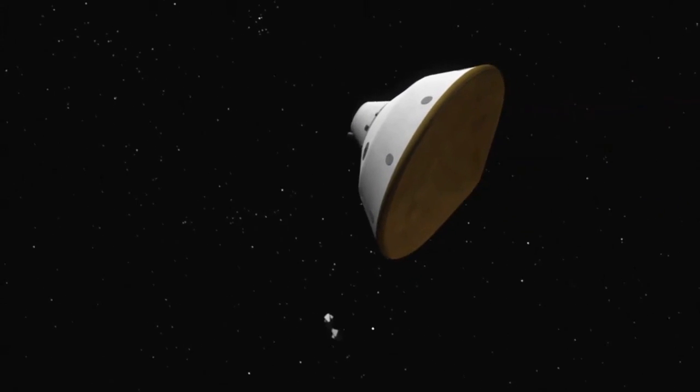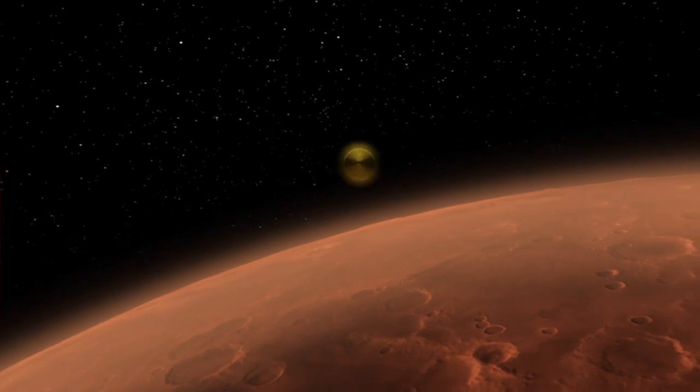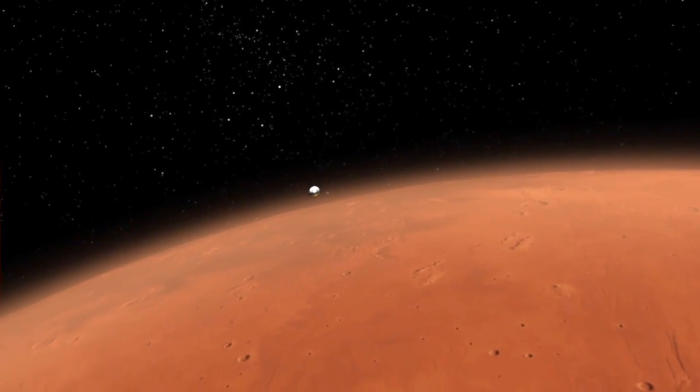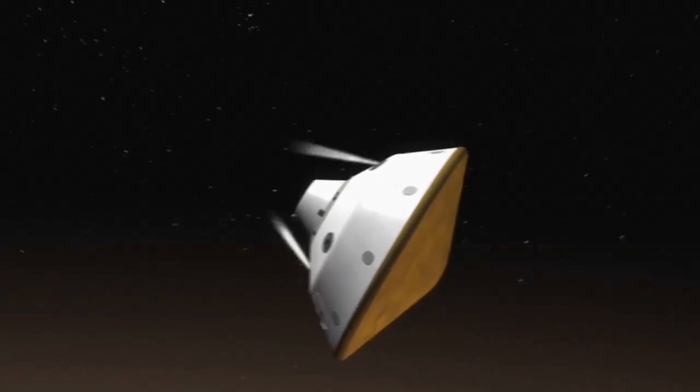Hitting the atmosphere at about 13,000 miles per hour, the spacecraft begins to slow down. While slowing down, the spacecraft uses thrusters to help steer toward the landing site.